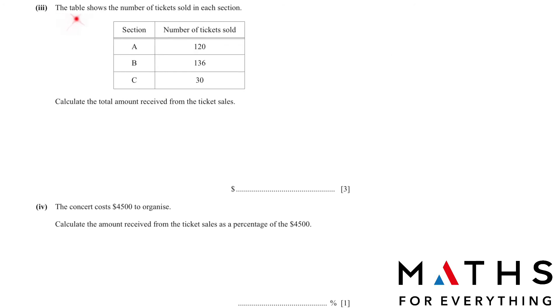Part 3. The table shows the number of tickets sold in each section. Section A, 120 tickets sold. B, 136. C, 30. Calculate the total amount received from the ticket sales. A very easy 3 mark question. Let's write down the cost of the tickets for section A, B and C. Now we just have to multiply by the number of tickets sold and we write the answer here. These are the answers we will get and then you add it up. So $3,228.